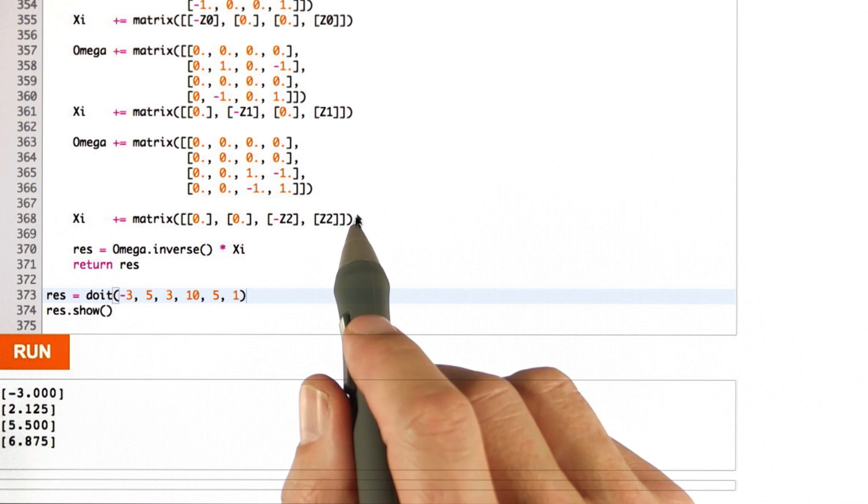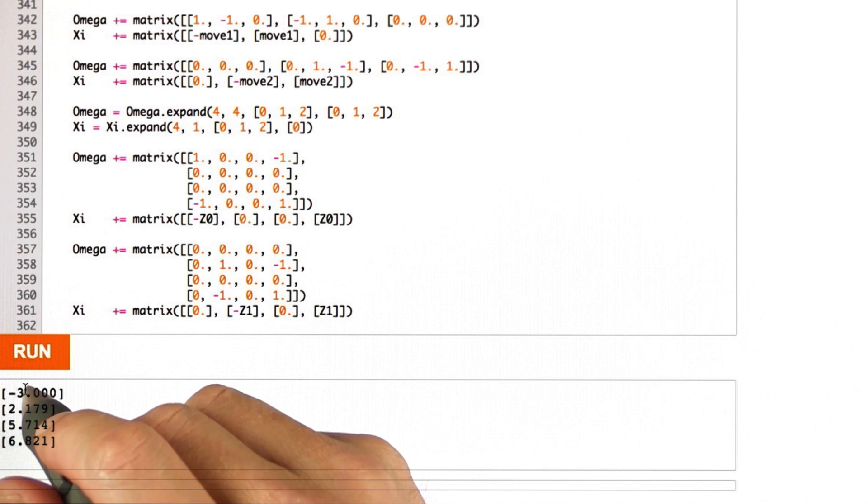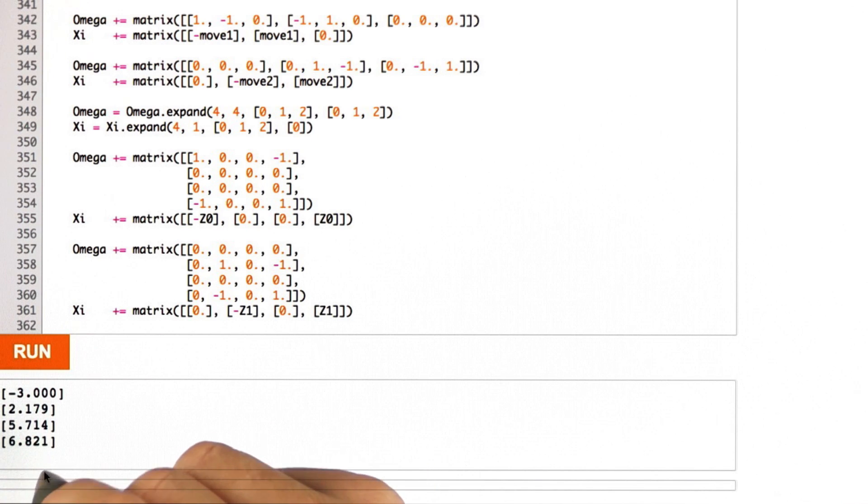When I do this, I get minus 3, 2.1, 5.714, and 6.821 as the answers. And you'll see in this final result, the final rover position of 5.714 and the landmark position of 6.821 are really close to 1 in difference, which was the measurement, because we now believe this measurement over proportionally over other measurements and motions.